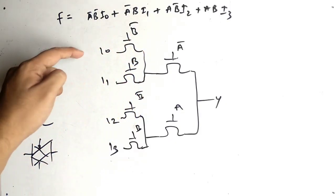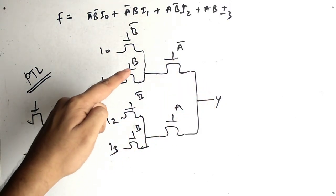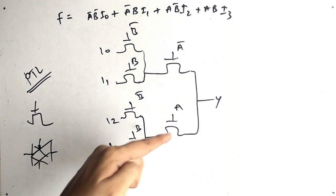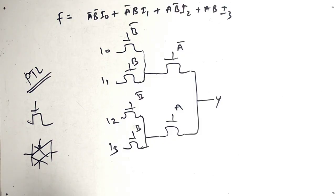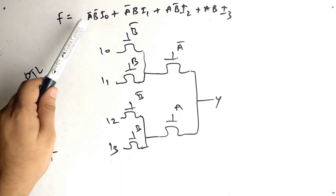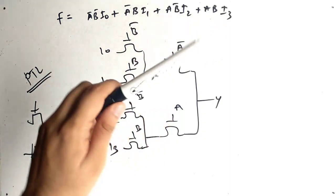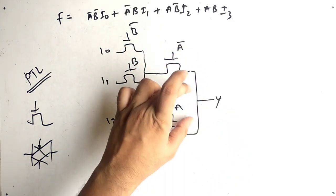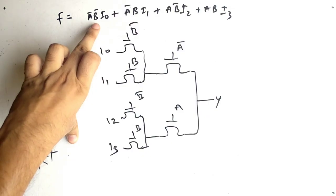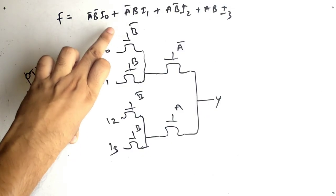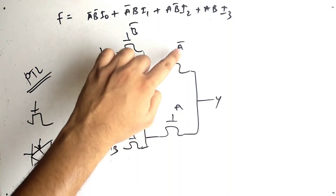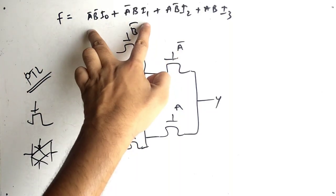If A̅ and B̅ are both ON, we get I0 as output. If A̅ and B are ON, we get I1. Similarly for the rest. Let's take a recap: PTL uses this symbol. Check for common terms — A̅ is common and A is common. Write A̅ and A at the extreme right side and club them to get the output, because joining means addition. The extra terms needed are: B̅·I0, B·I1, B·I1, B̅·I2, B·I3.